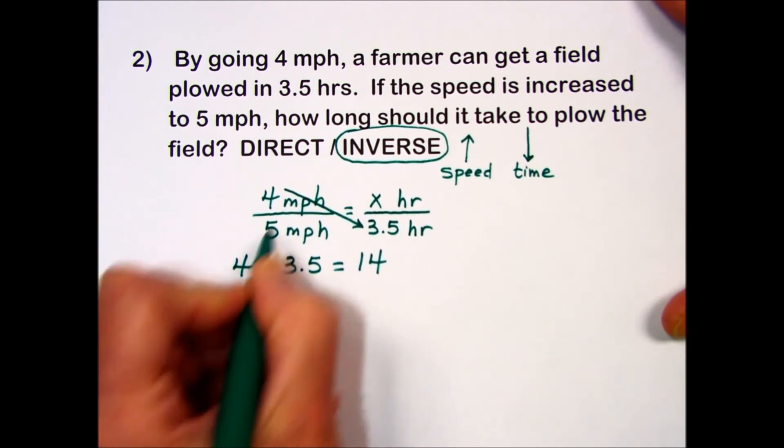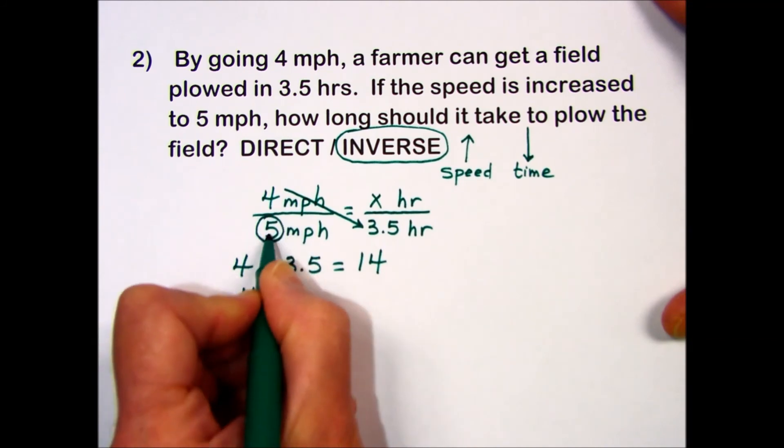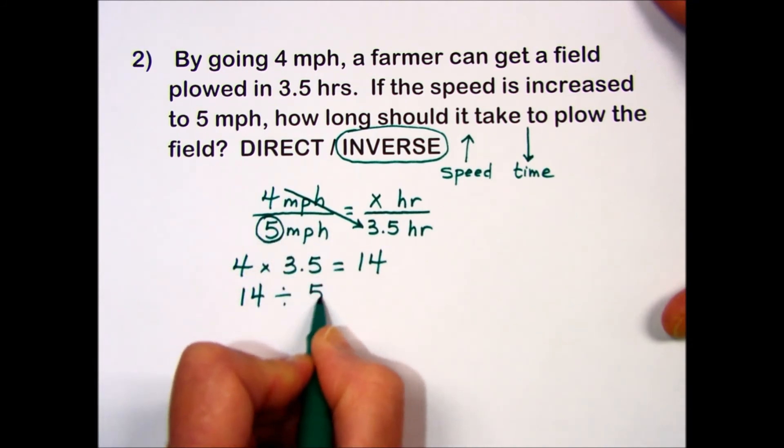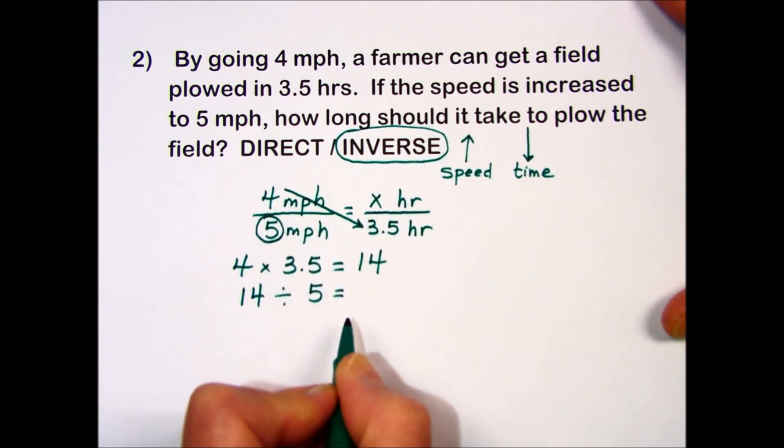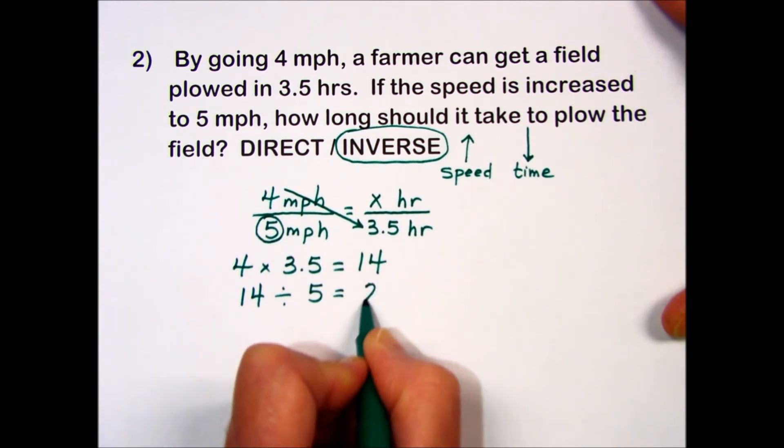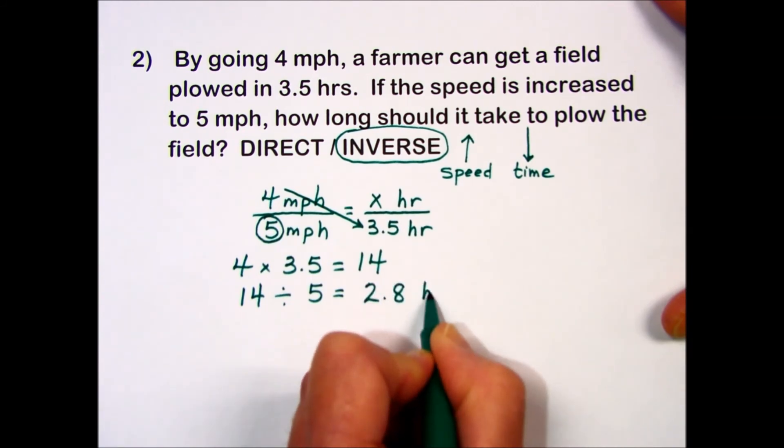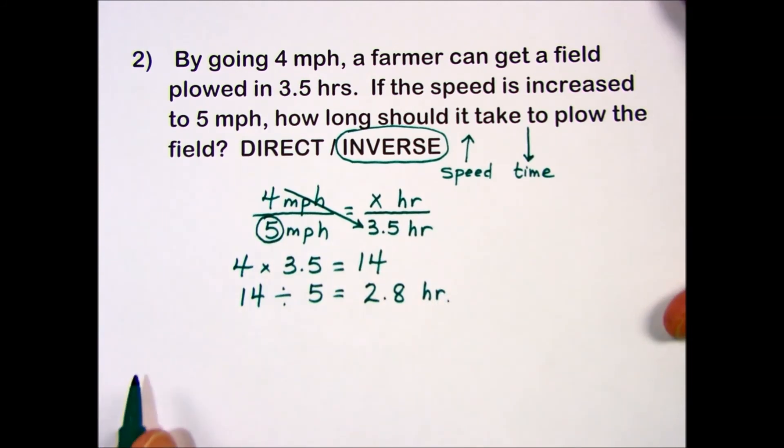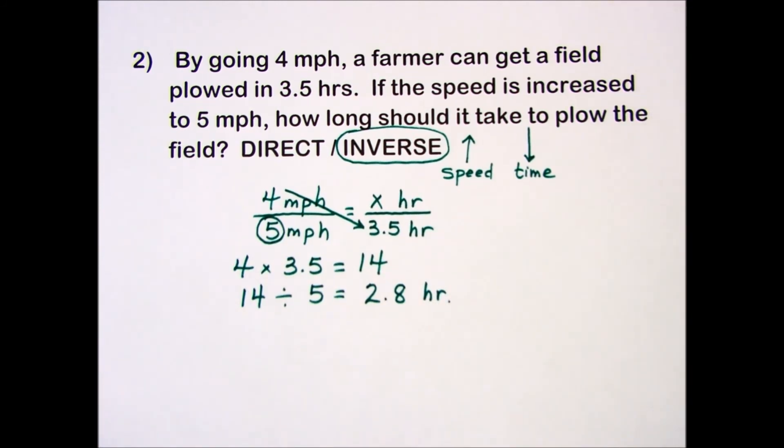We'll take the 14 and divide it by the number in the other diagonal to give us the missing value. When you take 14 divided by 5, you end up with 2.8 hours, less time at a faster speed for the answer to this problem.